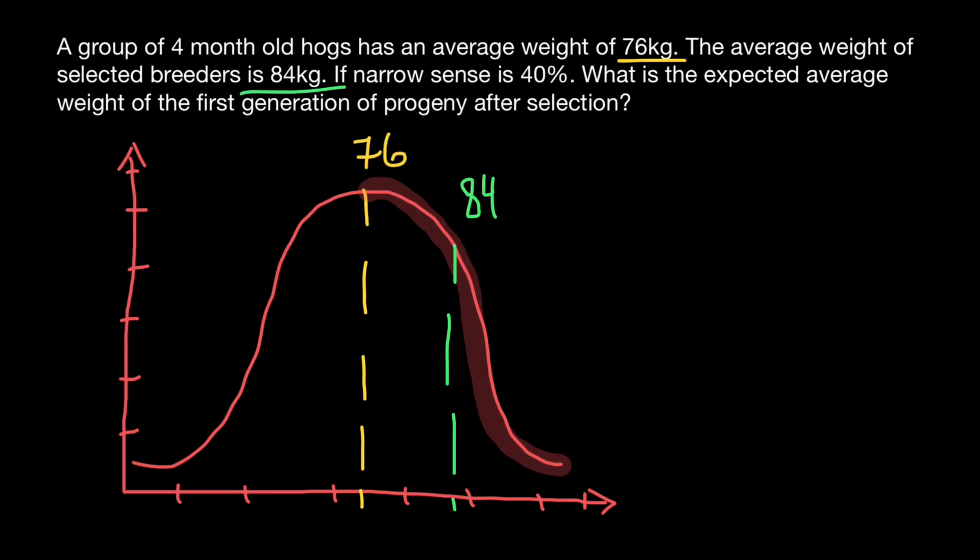Before I show you a solution, I have to tell you that the new generation, or F1 generation, the weight of the progeny has to be between these two means. So this is going to be easy to check if your answer is correct or wrong. If it is outside of these two means, that means your answer is wrong.